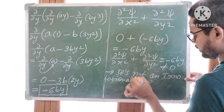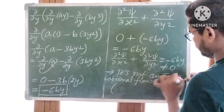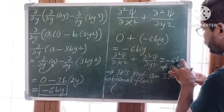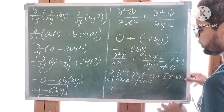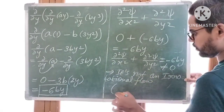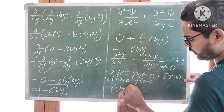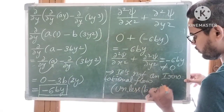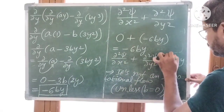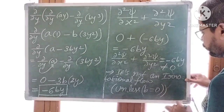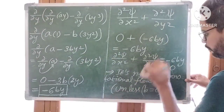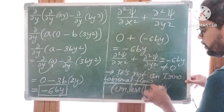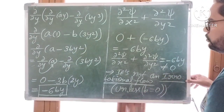So unless B is equal to 0, this is not irrotational. If B equals 0, it becomes irrotational flow. So it is not an irrotational flow unless B equals 0. At present, it is not an irrotational flow. Final answer: it is not an irrotational flow.